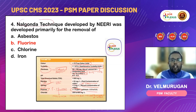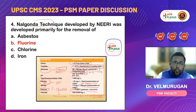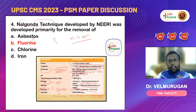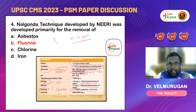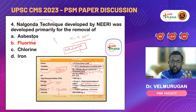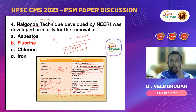Next question — Nalgonda technique. This is an easy question from nutrition. We use the Nalgonda technique for fluorosis. As discussed in the video, when the fluorine content in water is higher than 1.5 parts per million, it will not be suitable for drinking, so we have to remove the fluorine. That technique is called the Nalgonda technique — it is for defluoridation of water. It is linked to Nalgonda district, I think in Andhra, where it was developed, and so it was given the name Nalgonda technique.